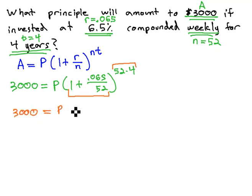So 3,000 equals P times 1 plus .065 divided by 52 is 1.00125. Again, sometimes the decimals are going to get weird. Make sure you keep every decimal your calculator gives you for accuracy.